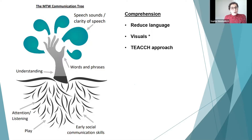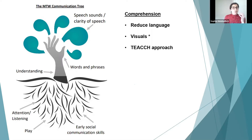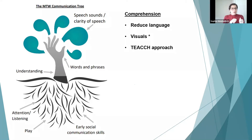The third TEACCH principle is the work system, which establishes expectations and promotes independence. Activities are kept in wallets or packets — what's in the pack is what they're expected to do, nothing more. The fourth principle is routine, which is the most important and functional support for that child. The fifth is visual structure: green boxes for 'to do' and red boxes for 'finished,' so the child can pop activities into the finished box once completed.